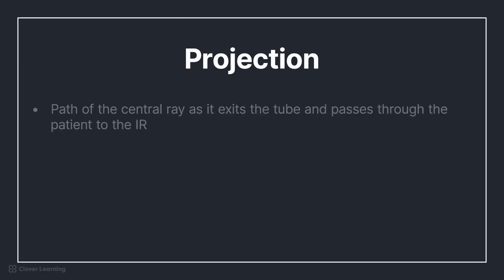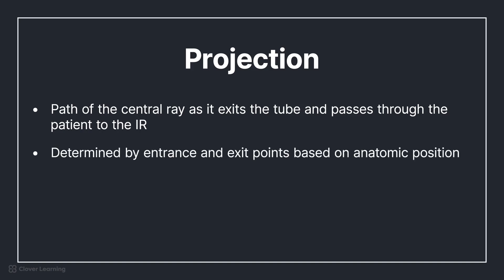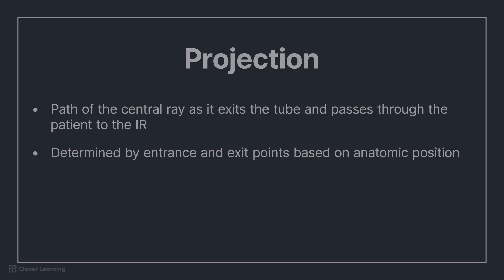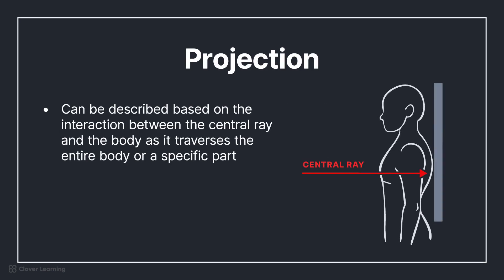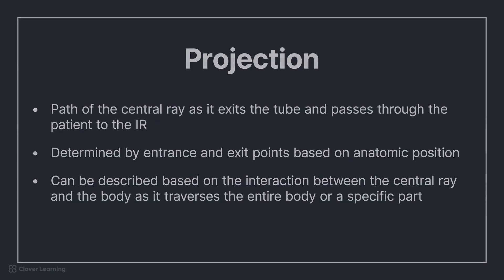Projection is defined as the path of the central ray as it exits the tube and passes through the patient into the IR. The majority of projections are determined by entrance and exit points based on anatomic position. For example, if the central ray enters anywhere on the front surface of the body and exits the back surface, an AP projection is obtained, regardless of body position. Additionally, projections can be described based on the interaction between the central ray and the body as it traverses the entire body or a specific part, such as axial or tangential.